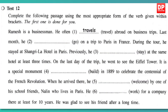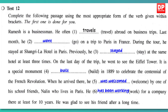Ramesh is a businessman who often travels abroad on business trips. Last month he went on a trip to Paris, France. During the tour he stayed at the Shangri-La Hotel in Paris — he had stayed at the same hotel at least three times previously. On the last day of the trip he went to see the Eiffel Tower, a special monument built in 1889 to celebrate the centennial of the French Revolution. When he arrived there he was welcomed by one of his school friends, Nalin, who lives in Paris and has been working for a company there for at least 10 years. He was glad to see his friend after a long time.